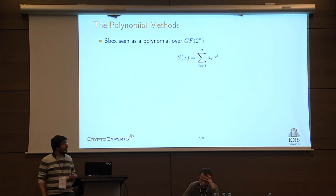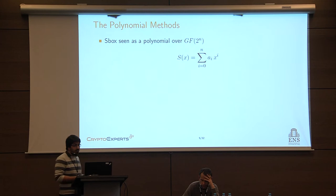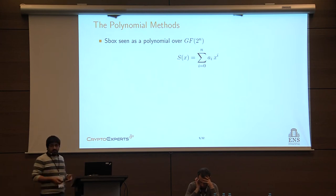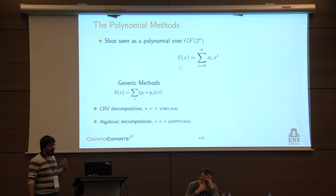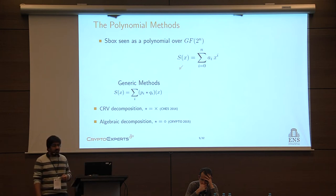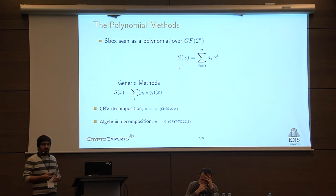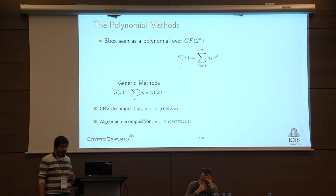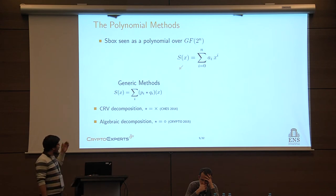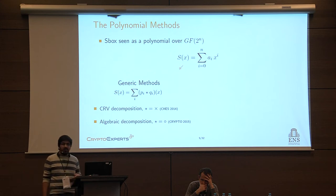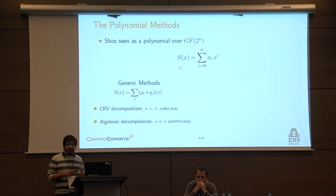In the state-of-the-art, the main approach is to look at the S-box as a polynomial over a finite field GF(2^N), and then find a representation to evaluate your S-box using those secure multiplications. The two main families of methods are: first, generic methods, where you try to evaluate any kind of S-boxes. The two best methods in terms of non-linear operations are the CRV decomposition proposed by Coron, Roy, and Vivek at CHES 2014, and the algebraic decomposition proposed at Crypto 2015. Both methods look at S-boxes as a sum of operations between families of polynomials — for CRV, using secure field multiplication, and for the algebraic decomposition, using composition of quadratic functions.